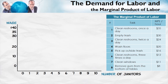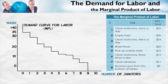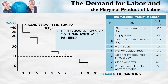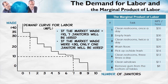Here's the marginal product of labor schedule, and here is the demand for labor derived from that schedule. Notice that if the wage were greater than $35 an hour, the firm would demand no janitors — because the very first janitor only adds $35 an hour to revenues, so if the wage is higher than that, that janitor is not worth hiring. As the wage falls, more and more janitors become worthwhile to hire. If the market wage were $10, seven janitors would be hired; if the market wage were $30, only one janitor would be hired.